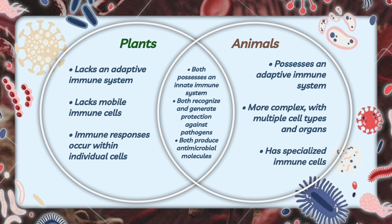Here is a Venn diagram representing the main differences and similarities between the immune systems of plants and animals. Plants lack an adaptive immune system, lack mobile immune cells, and have immune responses occurring within individual cells. Animals possess an adaptive immune system, are more complex with multiple cell types and organs, and have specialized immune cells. Their similarities: both possess an innate immune system, both recognize and generate protection against pathogens, and both produce antimicrobial molecules. In summary, the immune system plays a critical role in maintaining the health and well-being of both plants and animals, and drives adaptation, species diversification, and ecological balance.